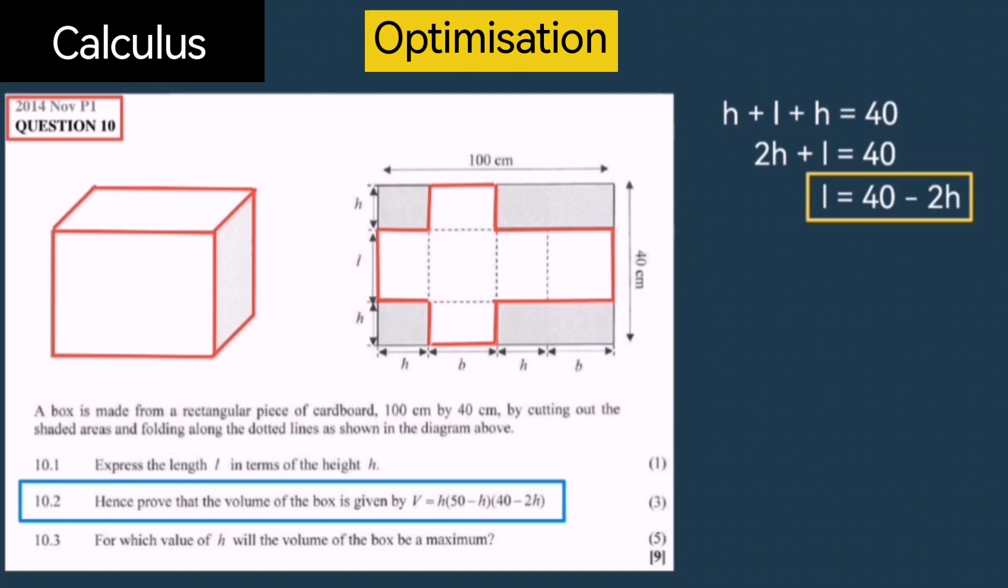Question 2 says: Hence, prove that the volume of the box could be given by V = H(50 - H)(40 - 2H). It's important to note that the volume of a rectangular prism is length times breadth times height. We've already expressed the length in terms of the height. Now we need to do the same for the breadth.